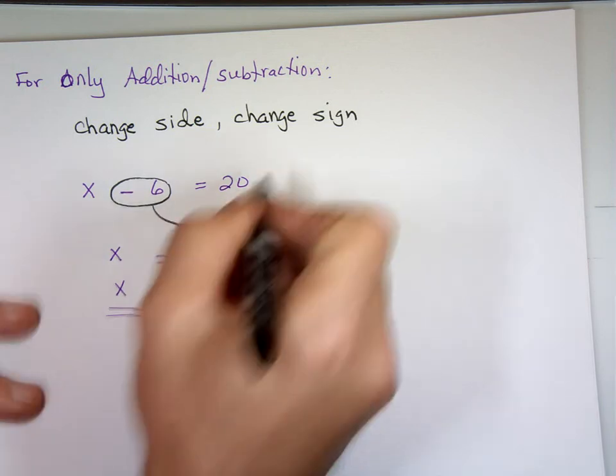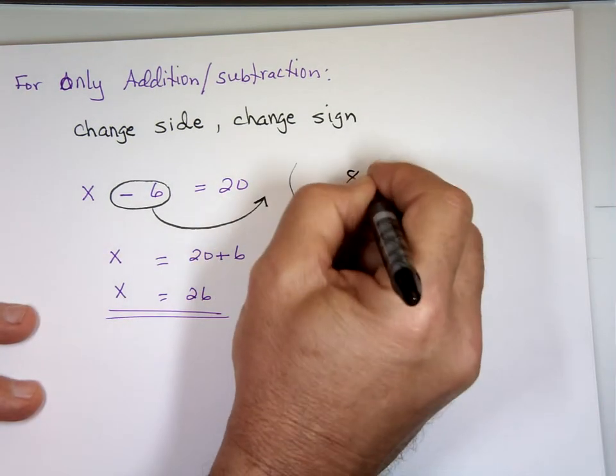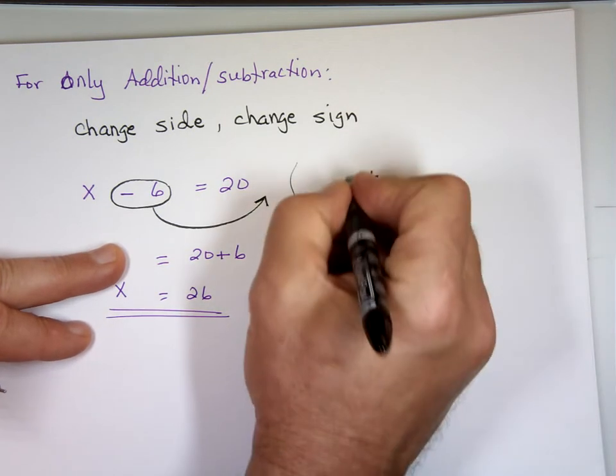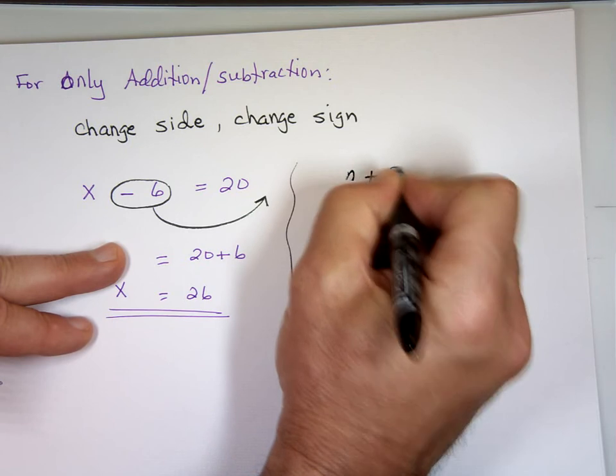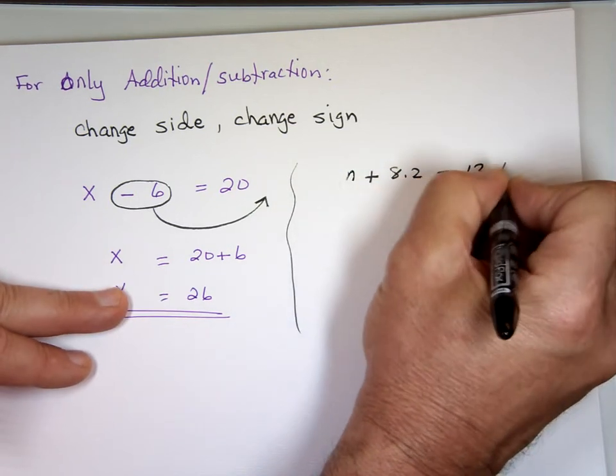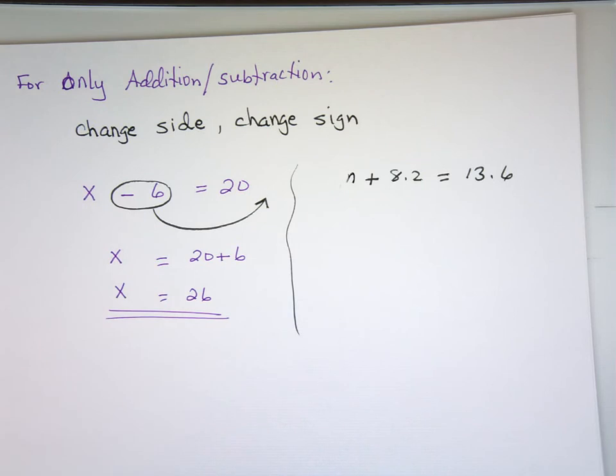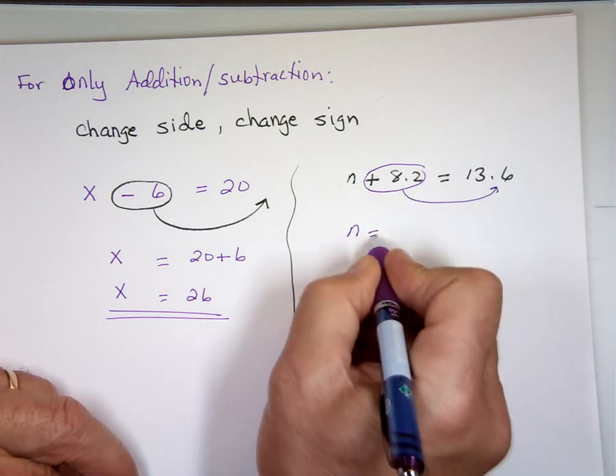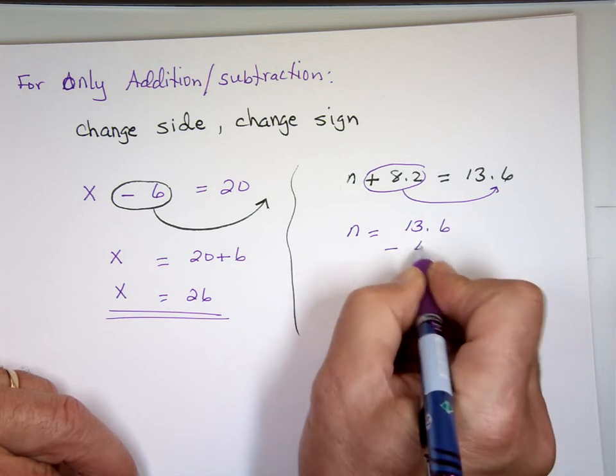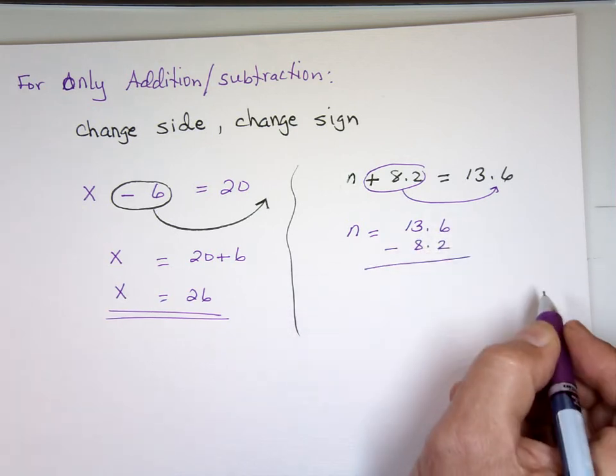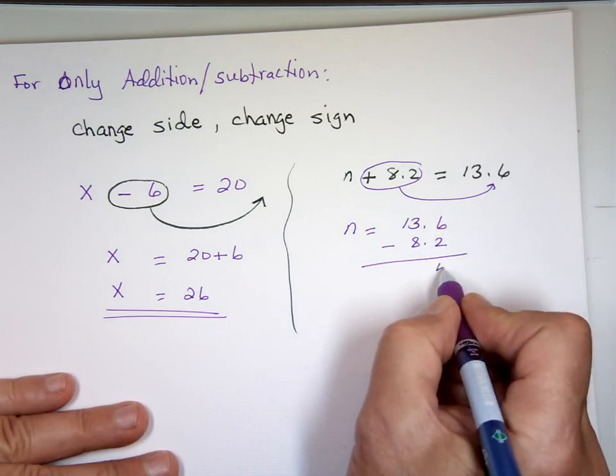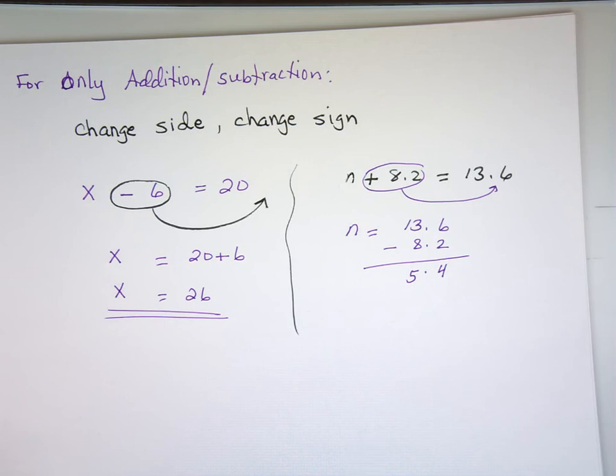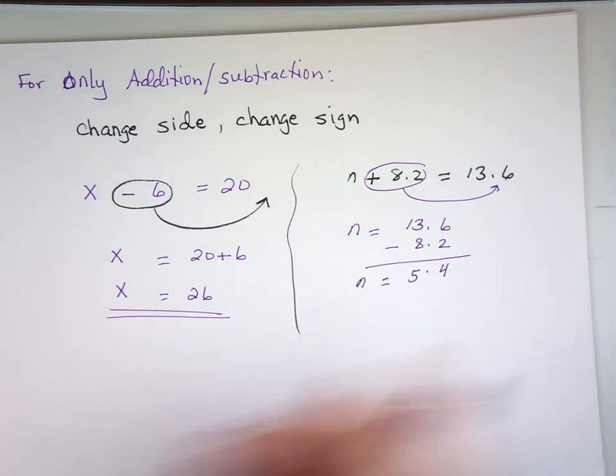Another one, if I have n plus 8.2 equals 13.6. Change side change sign, move the 8.2 to that side. n equals 13.6 minus 8.2. You change the sign. 2 from 6 is 4. This one again, as the problem gets bigger down the road, this might be a quicker way to get to the answer instead of doing multiple changes.